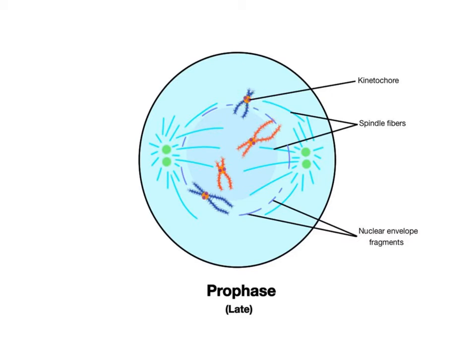As the centrosomes have now migrated to opposite poles of the cell, the spindle fibers produced from the centrioles attach to the kinetochores and drag the sister chromatids toward the middle of the cell, the equatorial region, in preparation for the next stage of mitosis.